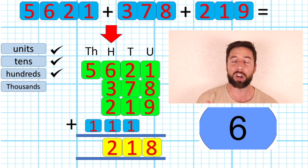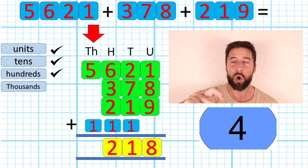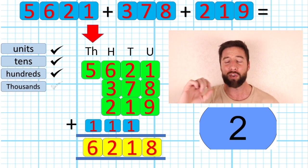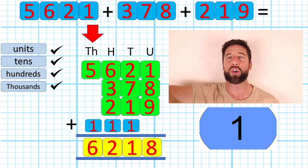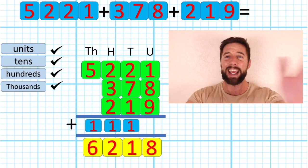Now I can do my final column, my 5 and this 1, 5 add 1 is 6, giving me a grand total of 6,218 in the time.